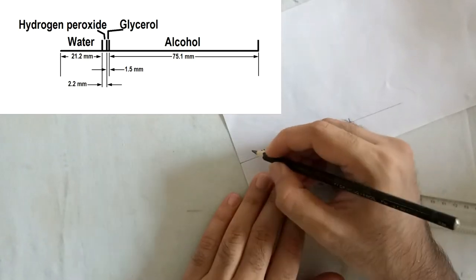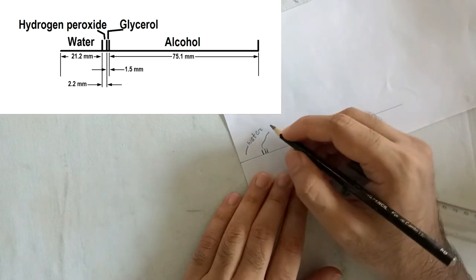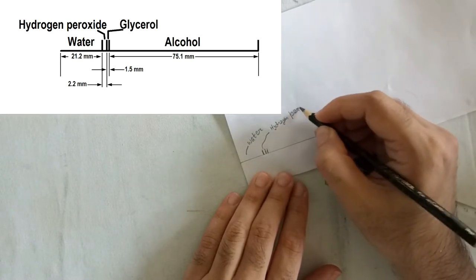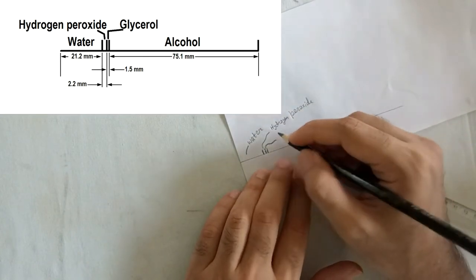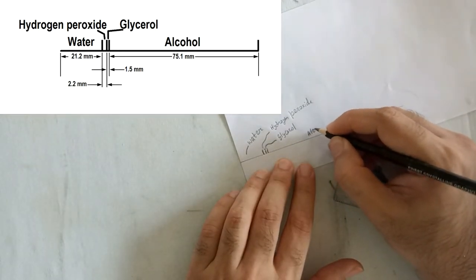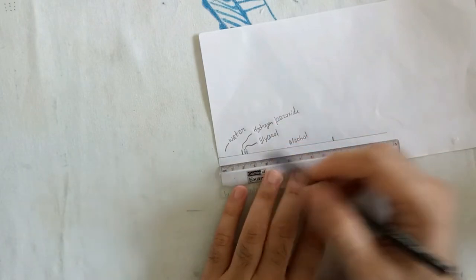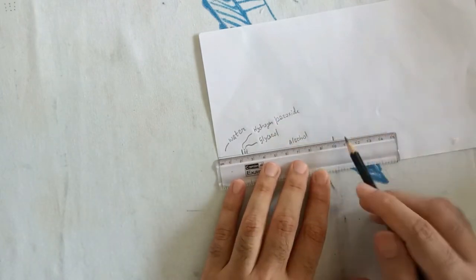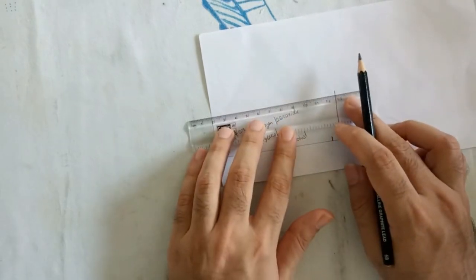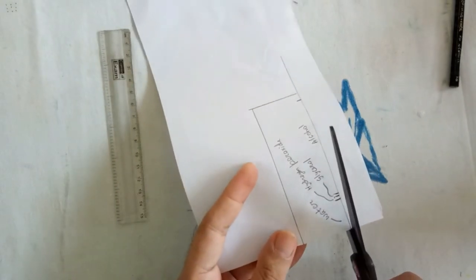Here's what each line means: the first line is water, the second is hydrogen peroxide, the third is glycerol, and the last one is alcohol. You can check whether these lines are correct—you should get exactly 10 centimeters. Now draw a rectangle around your marks and cut along the edges.